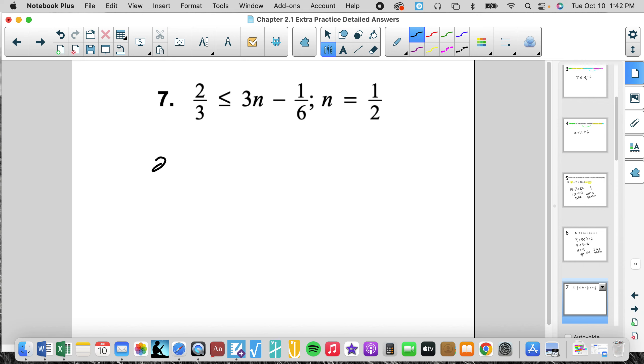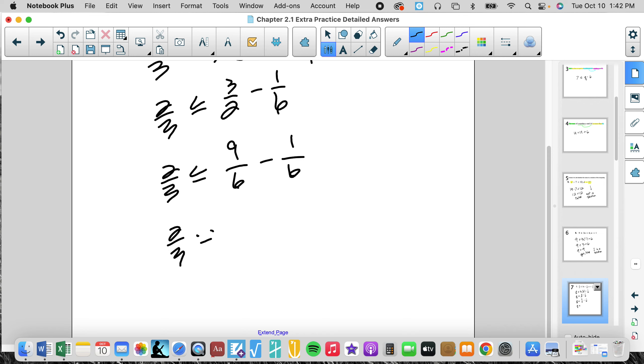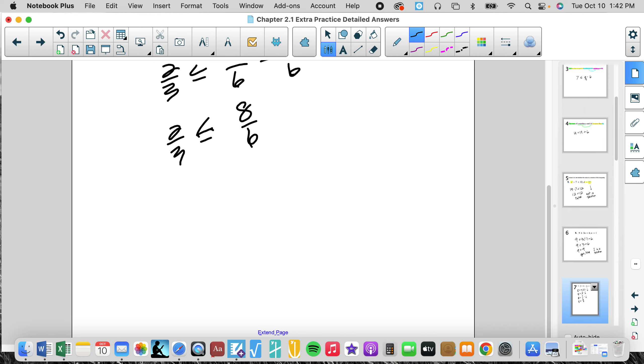Number 7. We've got some fraction work. 2/3 is less than or equal to 3 times 1/2 minus 1/6. We're going to simplify this right side. 3 times 1/2 is 3/2 minus 1/6. Now we're going to add these two fractions together, so I have to find a common denominator. Common denominator is 6. 2 times 3 is 6, so 3 times 3 is 9. 2/3 is less than or equal to 9/6 minus 1/6 is 8/6, and let's reduce that. 2/3 less than or equal to 4/3. And is 2/3 less than 4/3? Yes it is. That's a true statement, so it is a solution. 1/2 is a solution to the inequality.